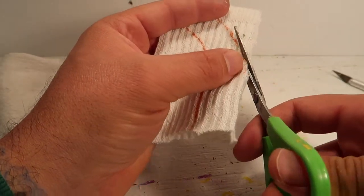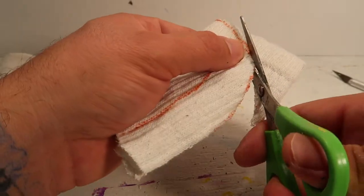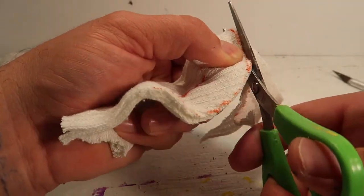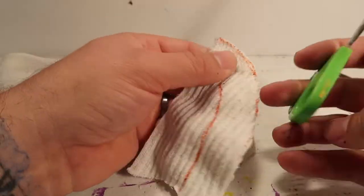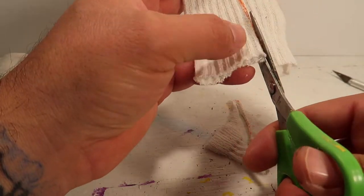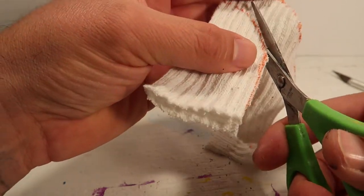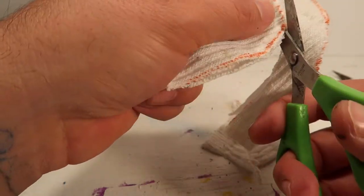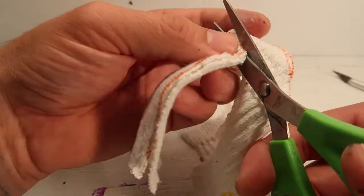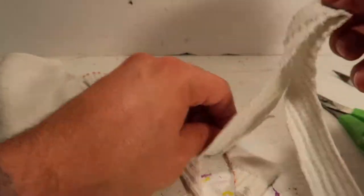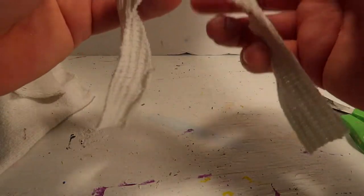So all you have to do is fold the sock in half, cut out the shape, and it'll automatically make a U shape as soon as you open it up. Make sure you're doing this with a parent or guardian. Make sure you guys don't cut your fingers off.